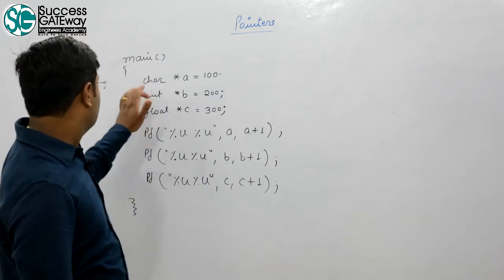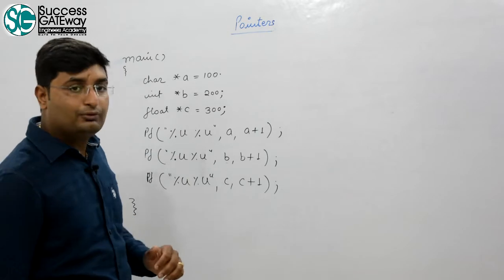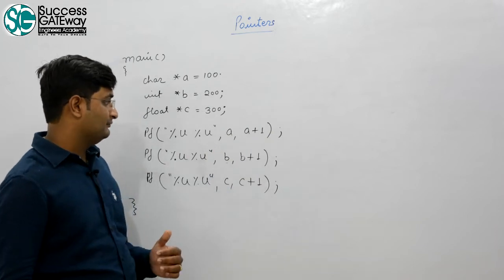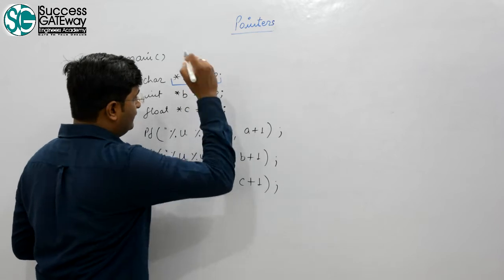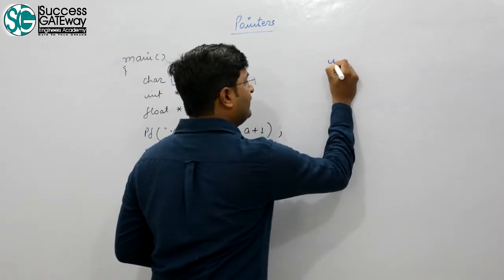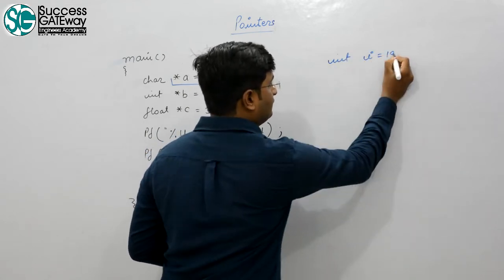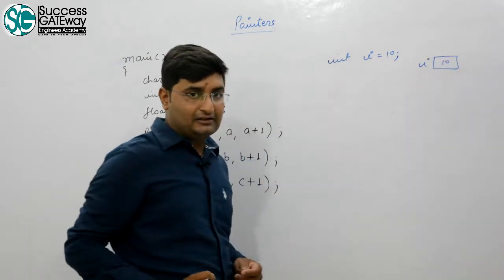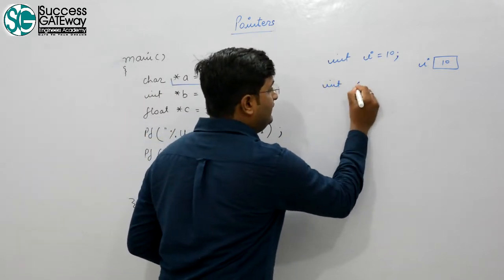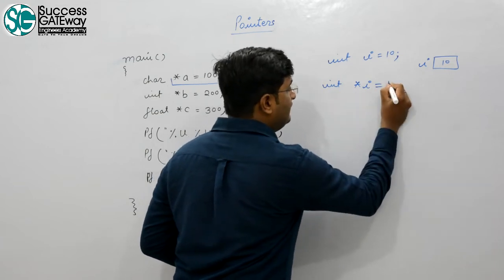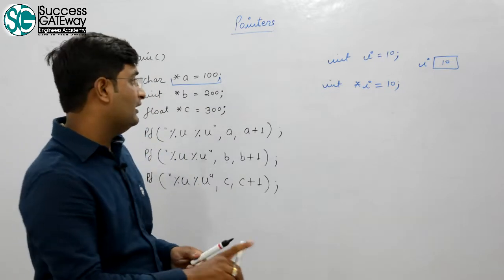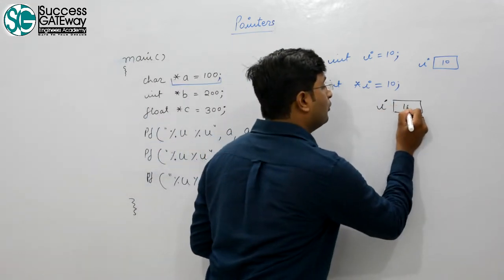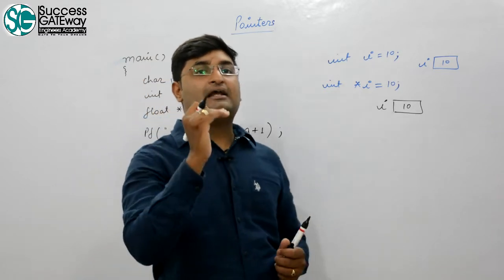Next question on pointers: char *a = 100, int *b = 200, float *c = 300. What are the printed values? The key concept here is: when we write int *i = 10, it means i is a pointer variable holding the value 10 — meaning 10 is treated as an address of an integer, and at address 10 there is an integer value.